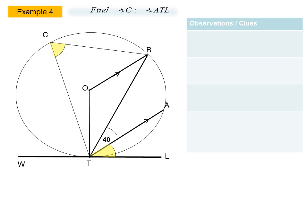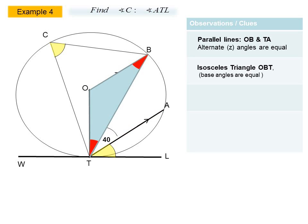In our last example, example number four, we are asked to find the two angles shown in yellow. Starting by observing the diagram and looking for clues, we note that we have two parallel lines OB and ATA. We expect to apply the theory of alternate angles, because we note a Z-angle exists. Our second clue is the isosceles triangle OBT, where the base angles are equal.